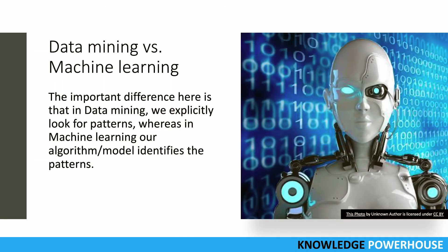An important difference between data mining and machine learning is that data mining explicitly looks for patterns, whereas in machine learning a model is created and that model will identify whether there are any patterns or not, and what kinds of classes emerge from the data. The model can automatically learn — automatic learning is a key feature of machine learning.